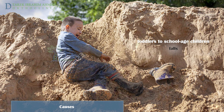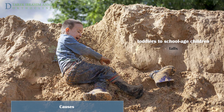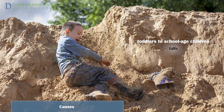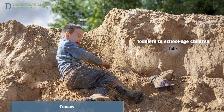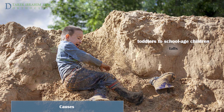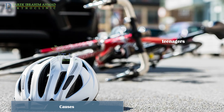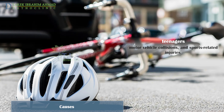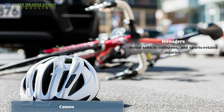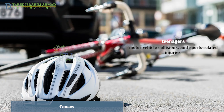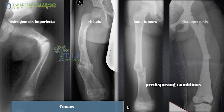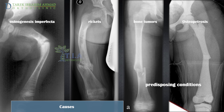For toddlers to school-age children, falls remain the leading cause. Even relatively low energy injuries such as a fall from a low height or fall while running may result in a femoral shaft fracture. As children reach their teenage years, motor vehicle collisions and sports-related injuries account for the majority. Patients with predisposing conditions such as osteogenesis imperfecta, cerebral palsy, other neuromuscular conditions, or benign or malignant bone tumors are at higher risk.